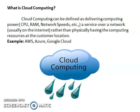What is cloud computing? Cloud computing can be defined as delivering computing power — CPU, RAM, network speeds, etc. — as a service over a network, usually the internet, rather than physically having the computing resources at the customer location. The customer can access all the services provided by the cloud vendor. Examples of cloud computing are AWS, Azure, and Google Cloud.